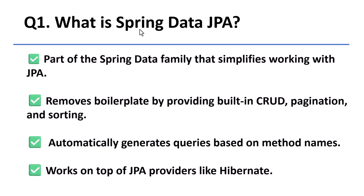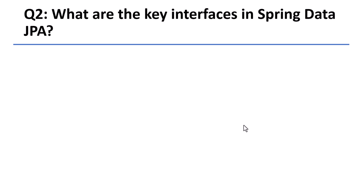Question 1: What is Spring Data JPA? Spring Data JPA is a part of the larger Spring Data family. It simplifies working with JPA — the Java Persistence API — by removing a lot of boilerplate code. It gives you built-in CRUD operations, supports pagination and sorting, allows custom queries, and even generates SQL just by looking at your method names.